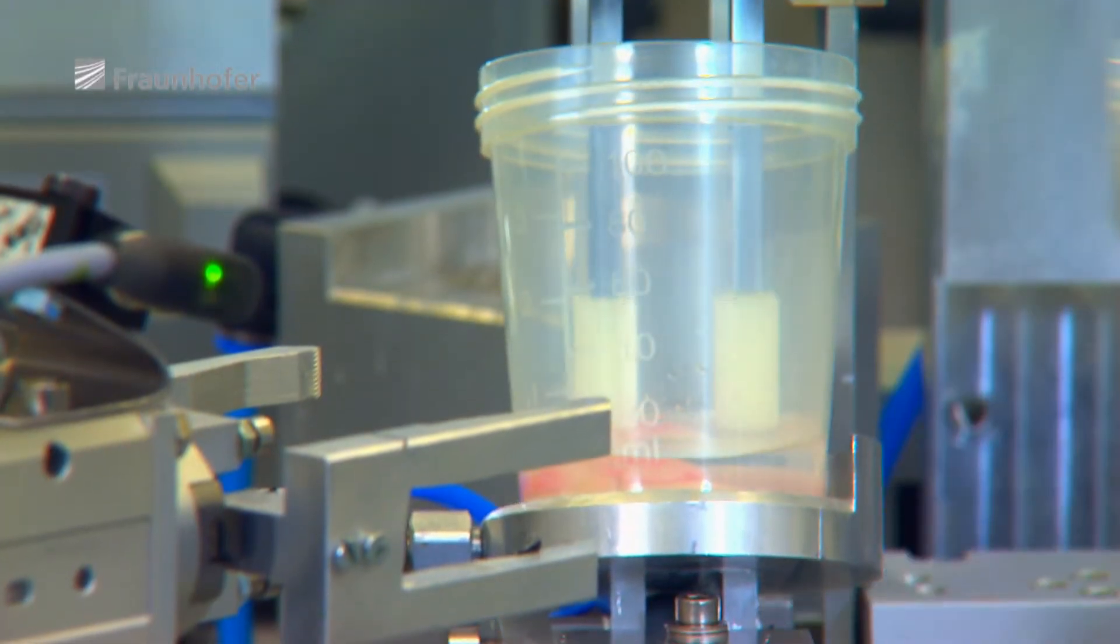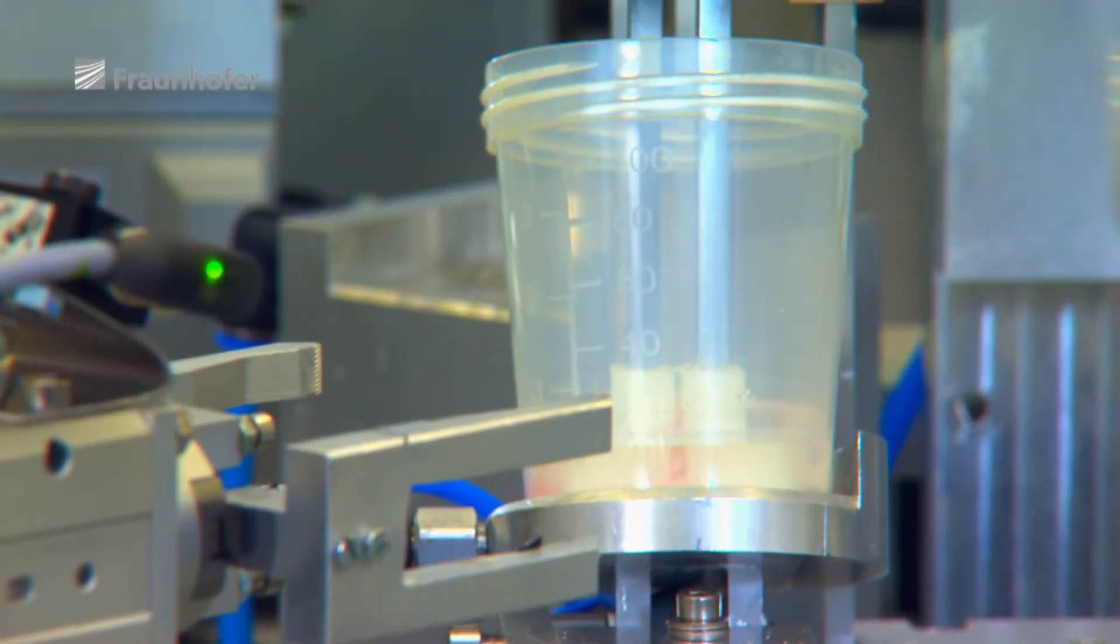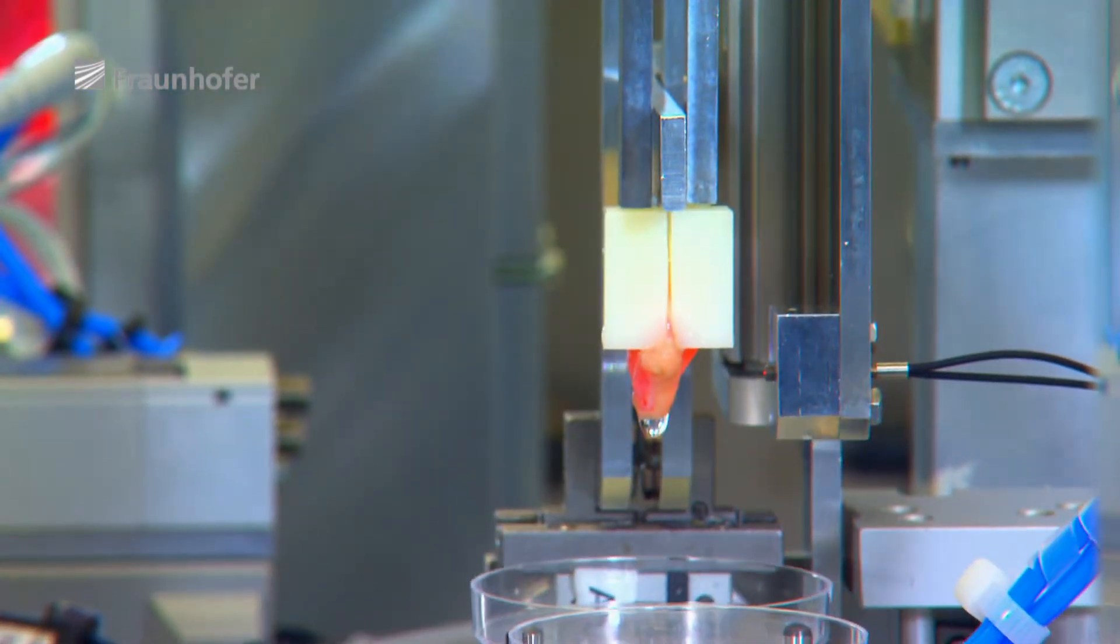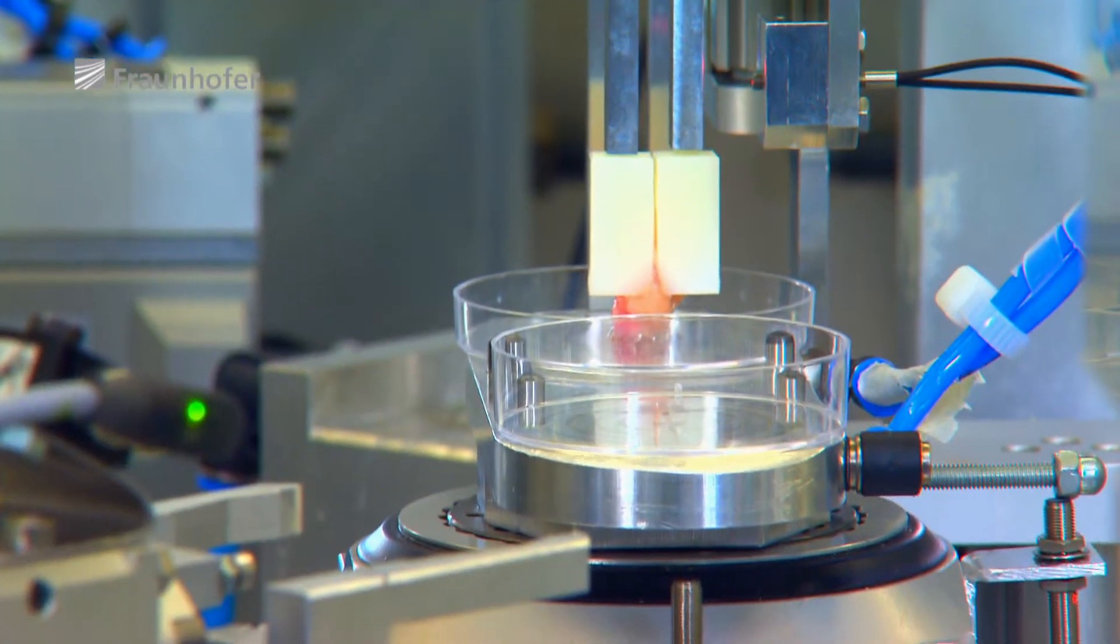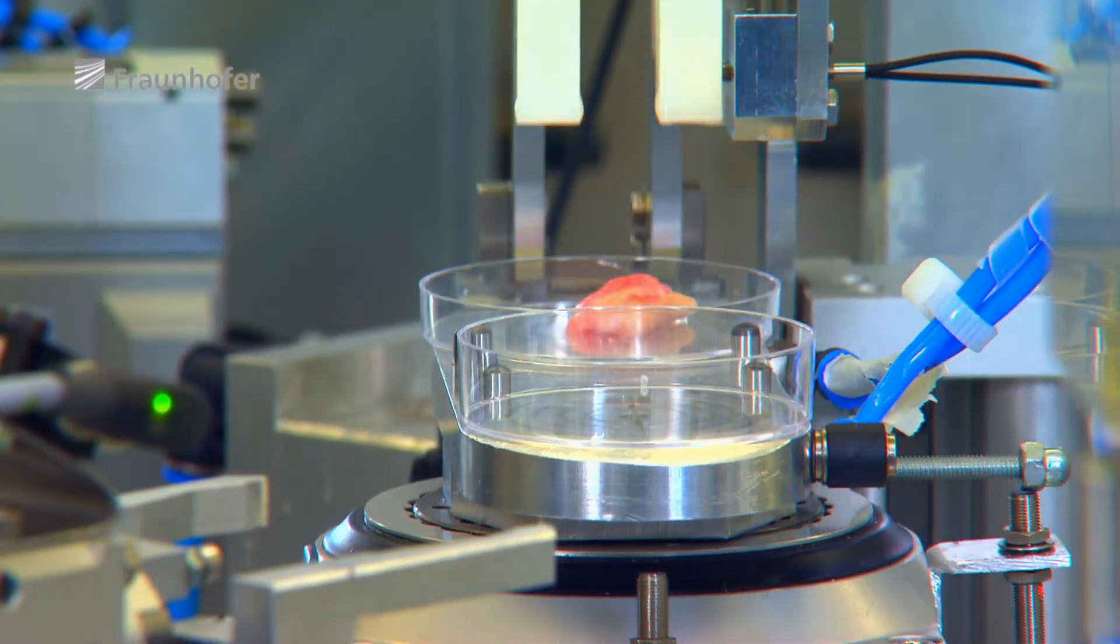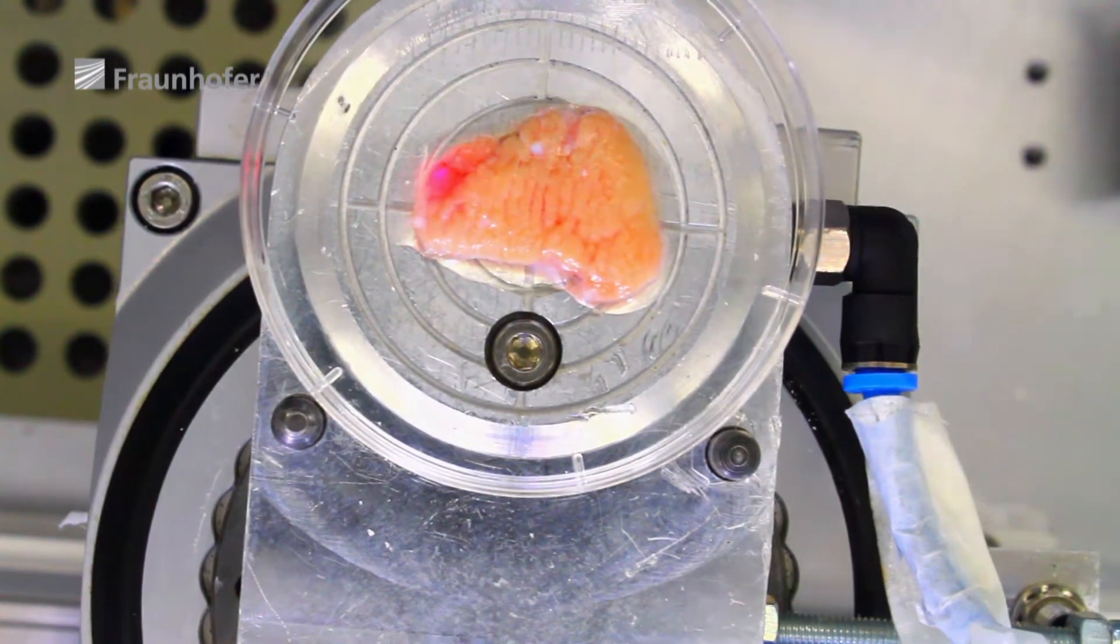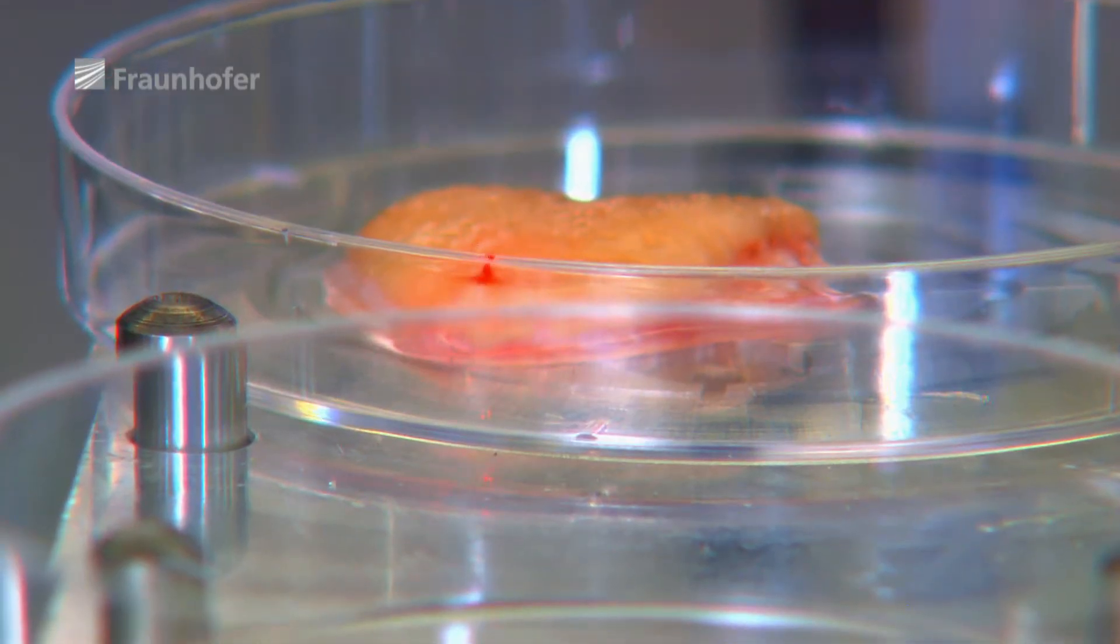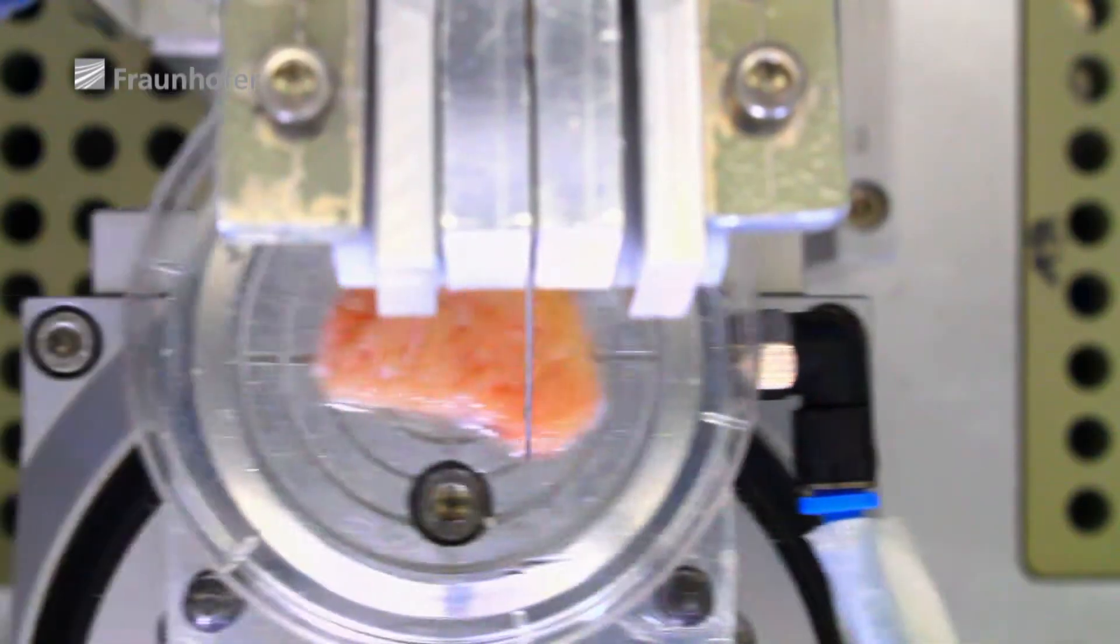The skin factory consists of three fully automated modules. In the first module, the equipment separates skin cells from a piece of human skin the size of a postage stamp. A laser beam measures this biopsy. Then, the sample is minced by a small blade, allowing the individual skin cells to be extracted.